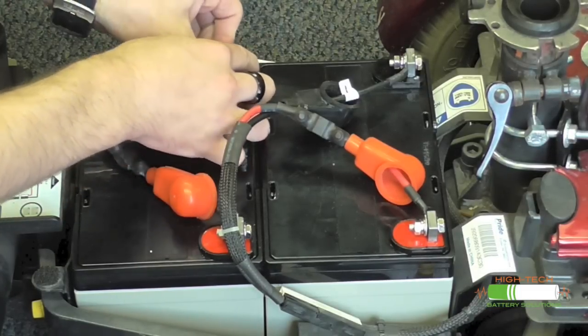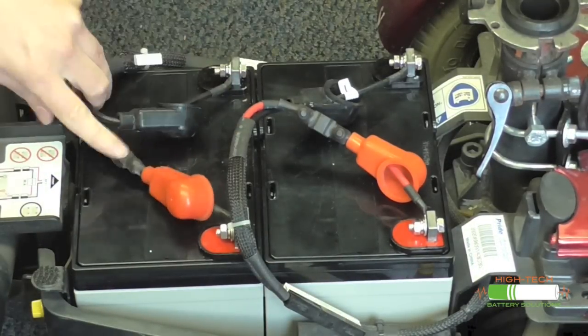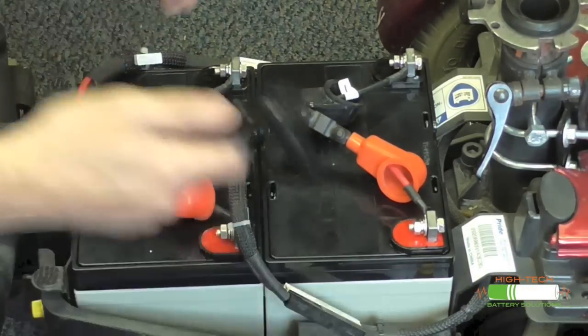And just double check, make sure everything is good. We have positive, positive, negative, negative for wire one. Positive, positive, negative, negative for wire two. Then you can go ahead and tighten everything down.